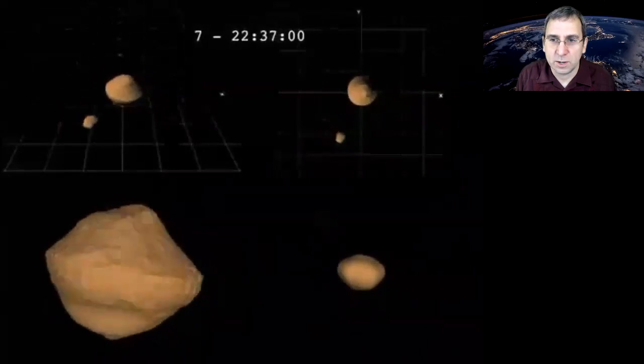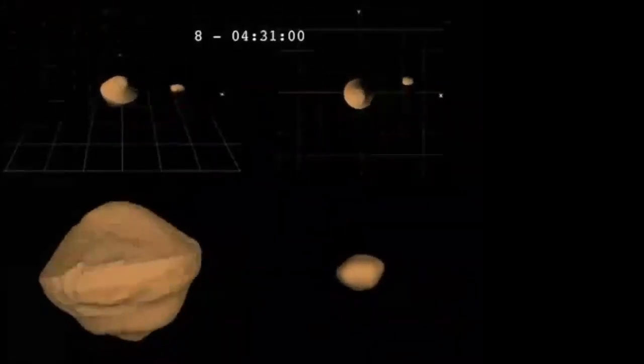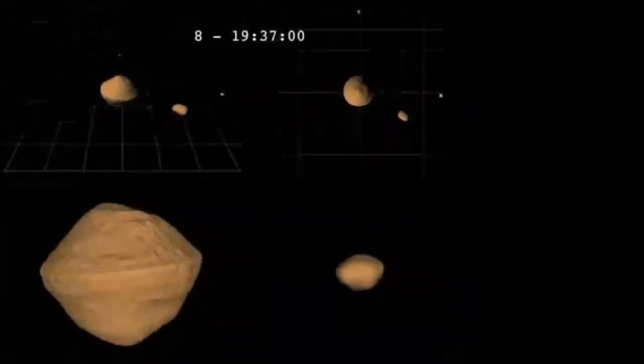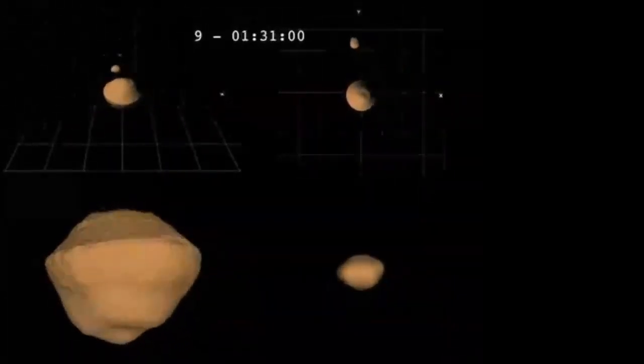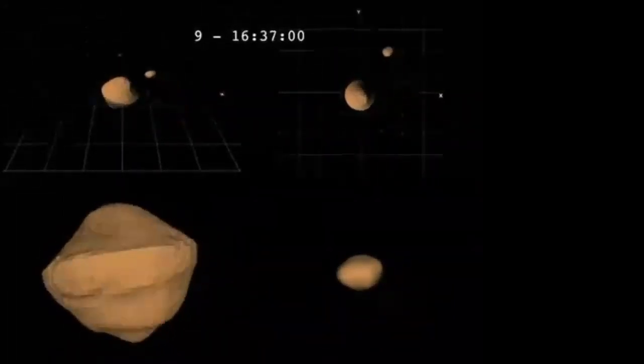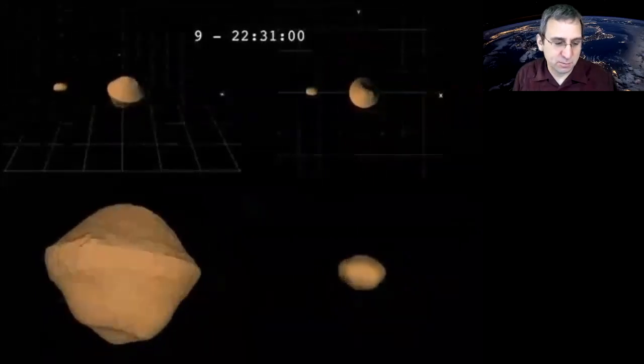There's a question. So I always just imagined that you need to have like a larger body than like two kilometers across to have something orbiting around it. So like, how does that smaller one not just get sucked in by something else, I guess?